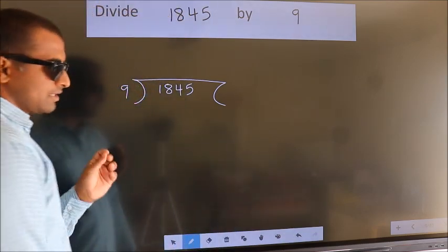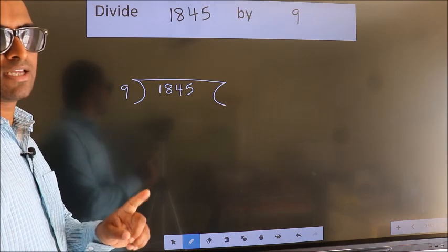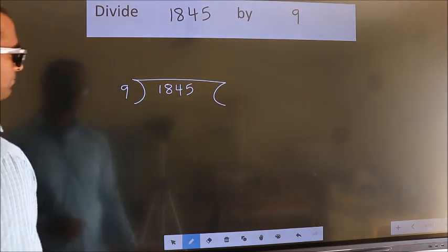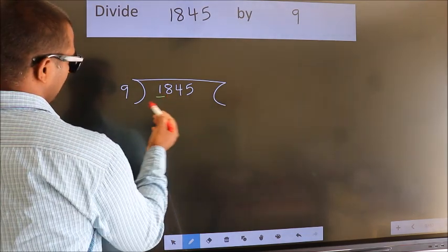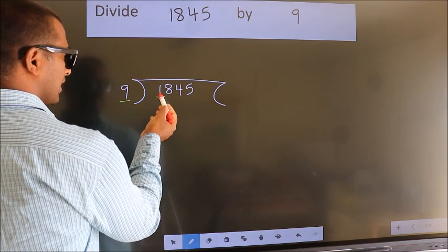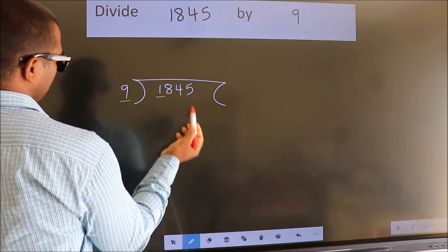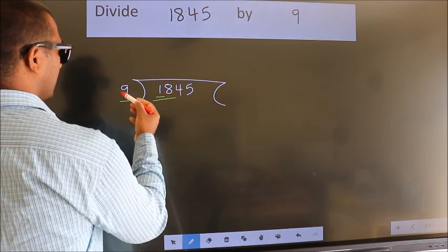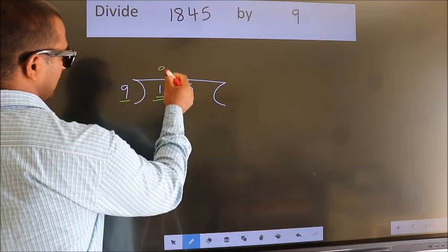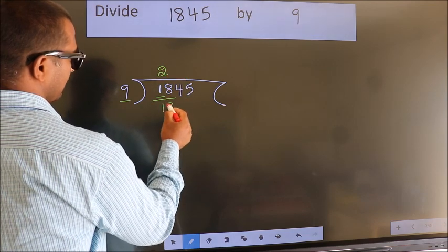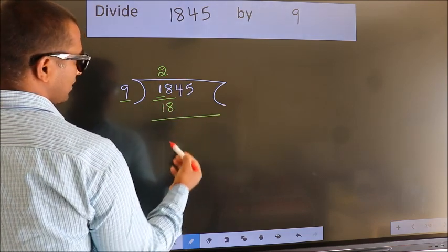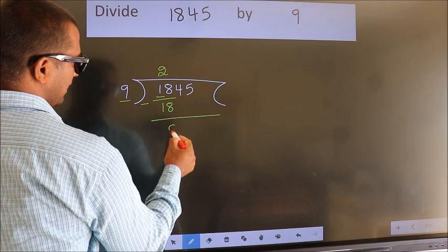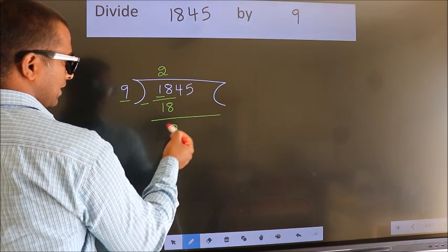This is your step 1. Next. Here we have 1. Here 9. 1 smaller than 9. So we should take 2 numbers, 18. When do we get 18? In 9 table. 9 2s 18. Now we should subtract. We get 0.